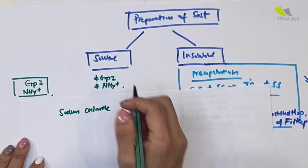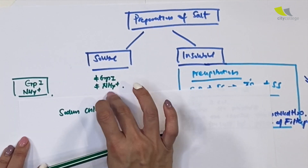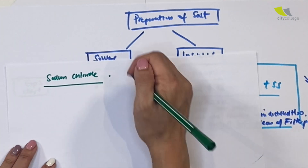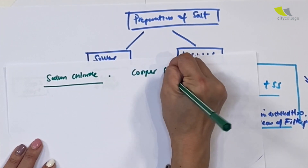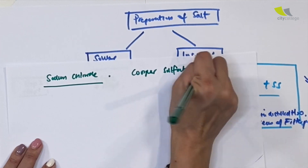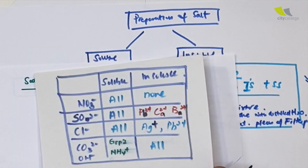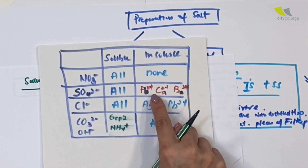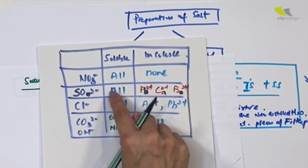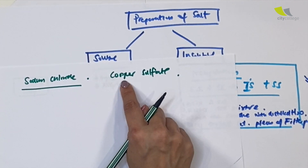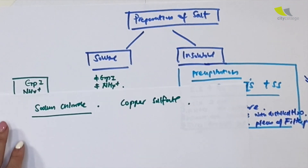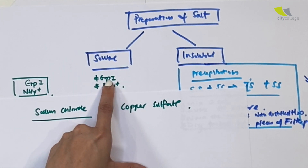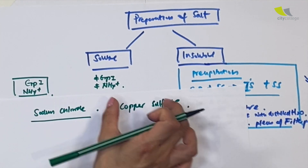What do you mean by not group one and not ammonium? Instead of sodium chloride, let me give you another example: copper sulfate. Using the table again — sulfate, unless it's lead, calcium, or barium, the rest are all soluble. Copper is soluble. Copper sulfate is soluble, but it's not group one and it's not ammonium. Therefore it falls under that category.